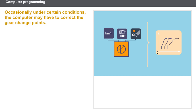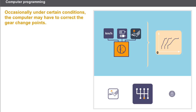Occasionally, under certain conditions, the computer may have to correct the gear change points. For example, if the driver suddenly lifts his foot off the accelerator pedal, the computer may demand that the gear engaged be held. The computer may also demand a change to one or two gears lower, according to how the accelerator pedal is depressed.